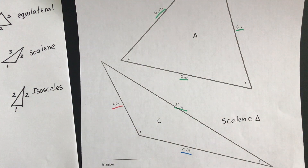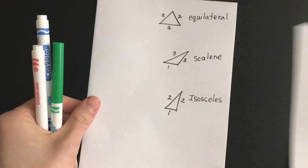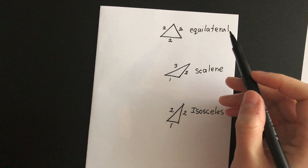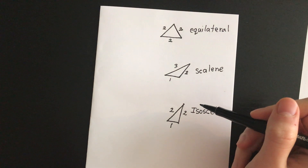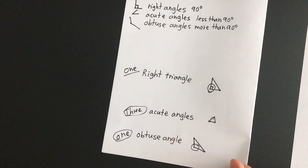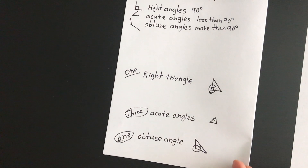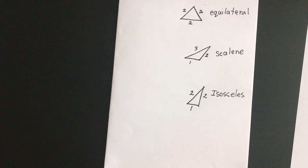You will also have a page to work on where you're going to be deciding if triangles are, by their sides, equilateral, scalene, or isosceles. Just be very careful that you read the instructions, because one page tells you to classify them by angles — so you write acute, right, or obtuse — but then one page tells you to work with how long their sides are. So just look out for those. And that will be it for today. Thank you.